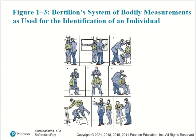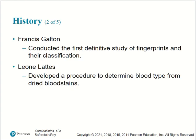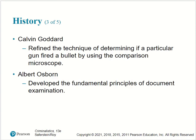Bertillon's system of bodily measurements, as used for the identification of individuals, essentially involved finding relationships between different body sizes and using those as a characteristic set of parameters for each individual. Francis Galton conducted the first definitive study of fingerprints and their classification. Leon Lotz developed a procedure to determine blood type from dried bloodstains.